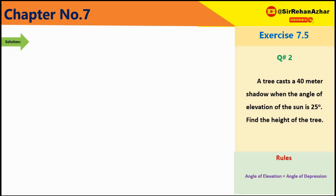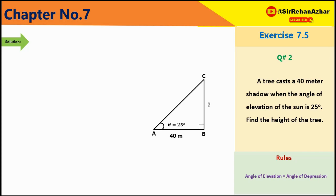Question 2: Angle of elevation सूरज का 25 degree है और दरखत का साया 40 meter है। दरखत की height मालूम करनी है। Figure draw करते हैं: साया AB = 40 meter, दरखत की height BC unknown, theta = 25 degree given है।